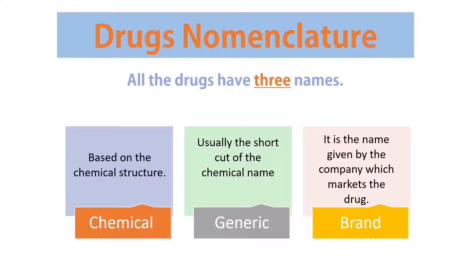Let's talk about drug nomenclature. All drugs have three names. The first is the chemical name, which is based on the chemical structure of the drug. The second is the generic name, which is usually a shortcut of the chemical name. The third is the brand name, given by the company that markets the drug. If we ask what name is used to prescribe a drug, the answer is the generic name.